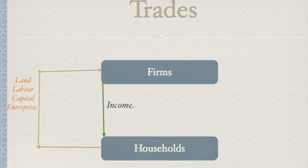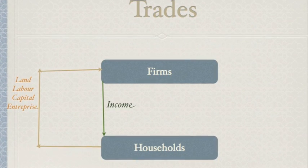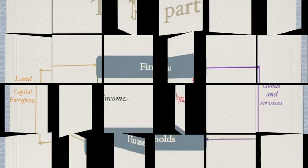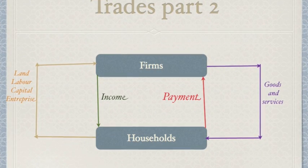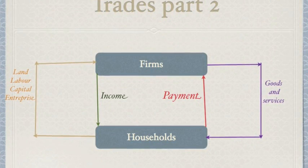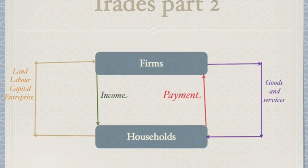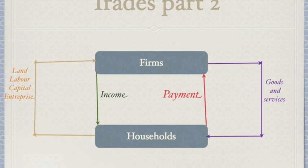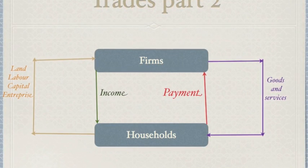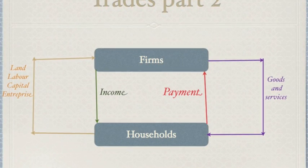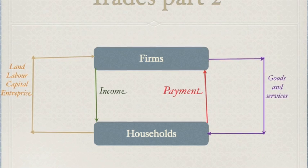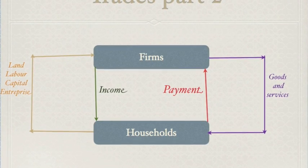This is demonstrated by the arrow shown on the diagram. On the other end, firms sell these goods and services to households in return for payment, which if it provides sufficient revenue not only encourages a firm to keep on producing goods and services but also attracts more firms into the industry.